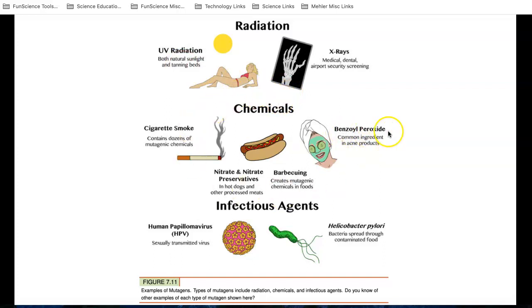But a lot of people don't know that certain chemicals, chemicals like benzoyl peroxide, barbecuing will create mutagenic chemicals in our food. Some foods like hot dogs and certain processed meats have nitrates and nitrate preservatives in them which are not good for us. And of course we know that cigarette smoking is bad for us as well. It can cause lots of problems in our lungs and the cells in our lungs.